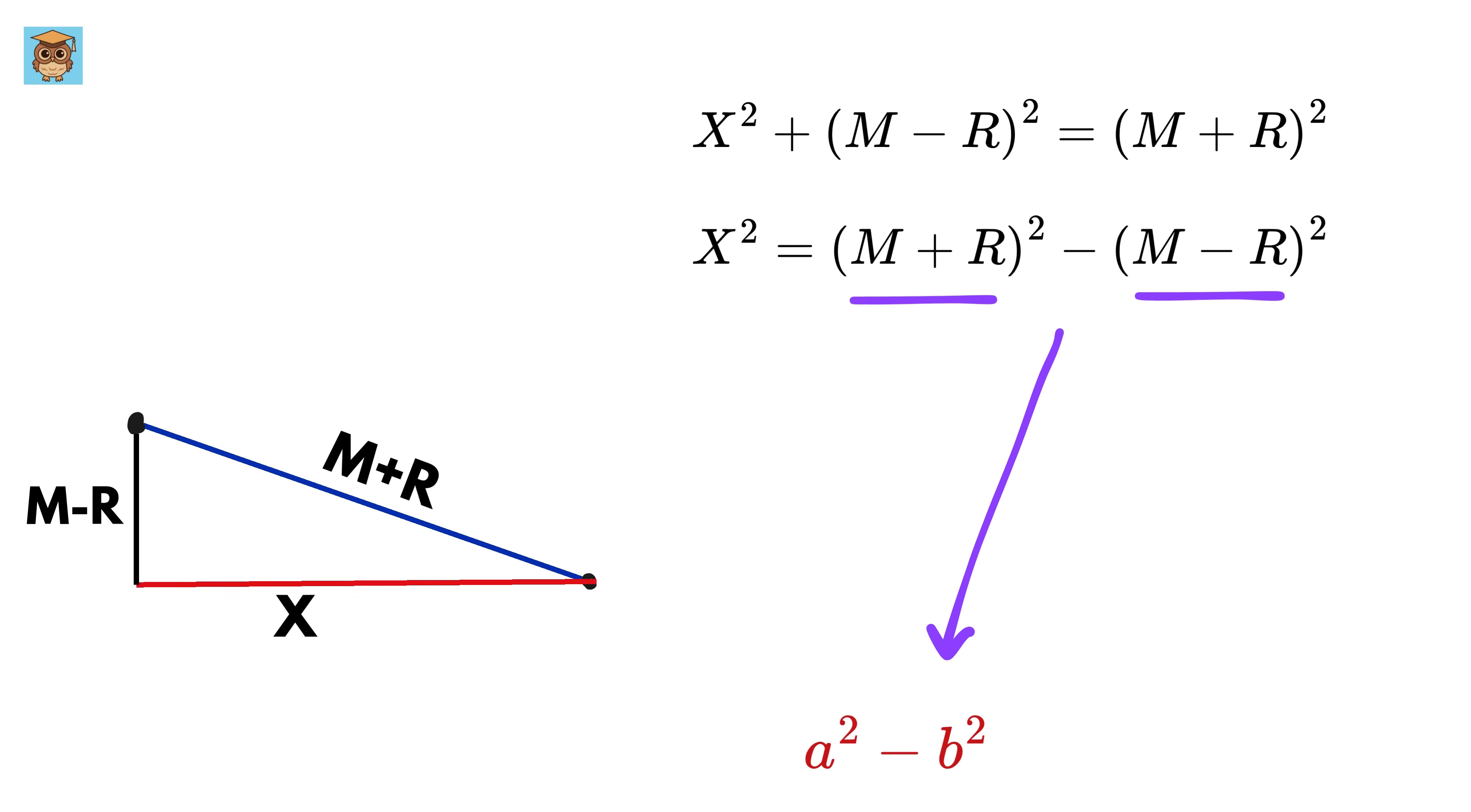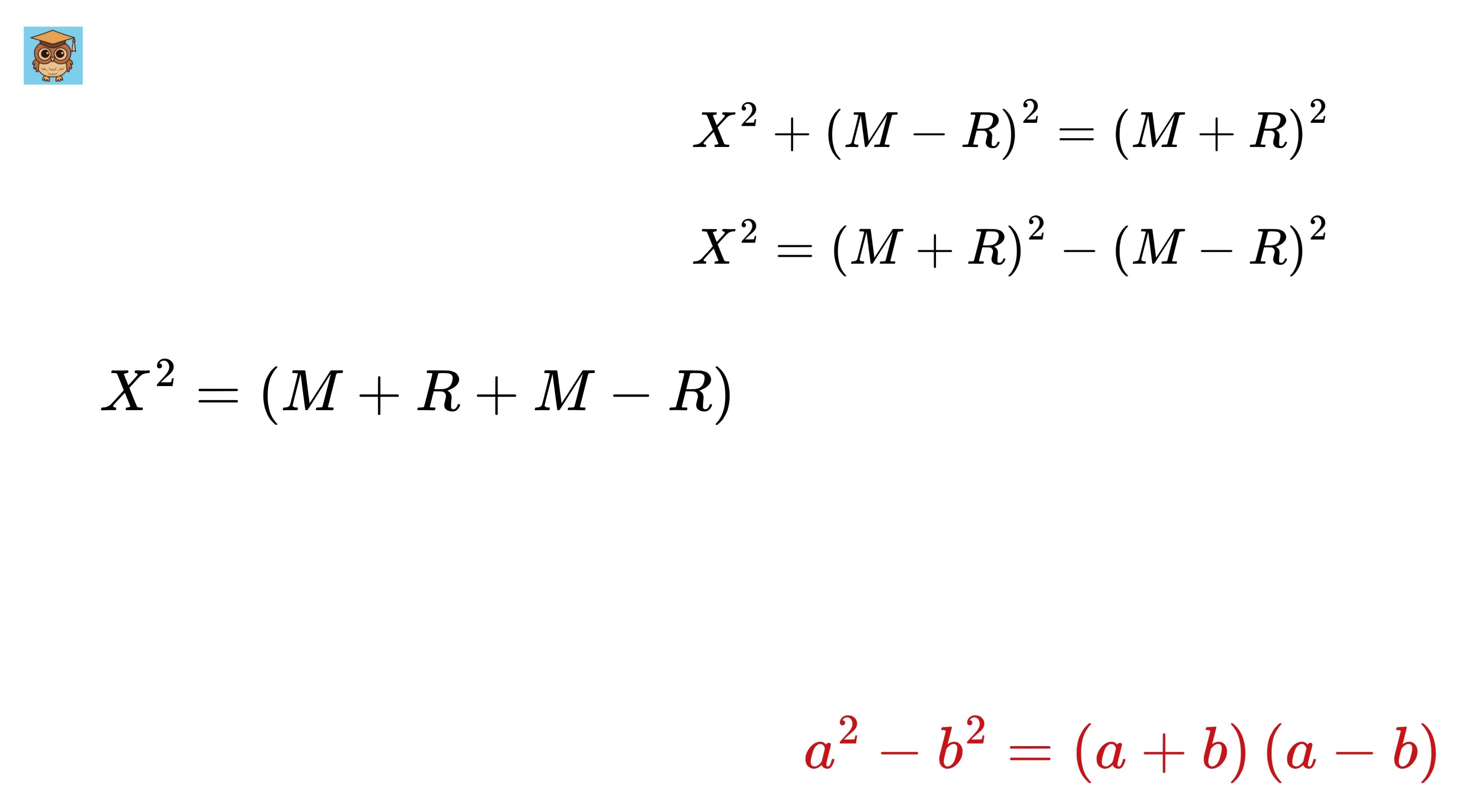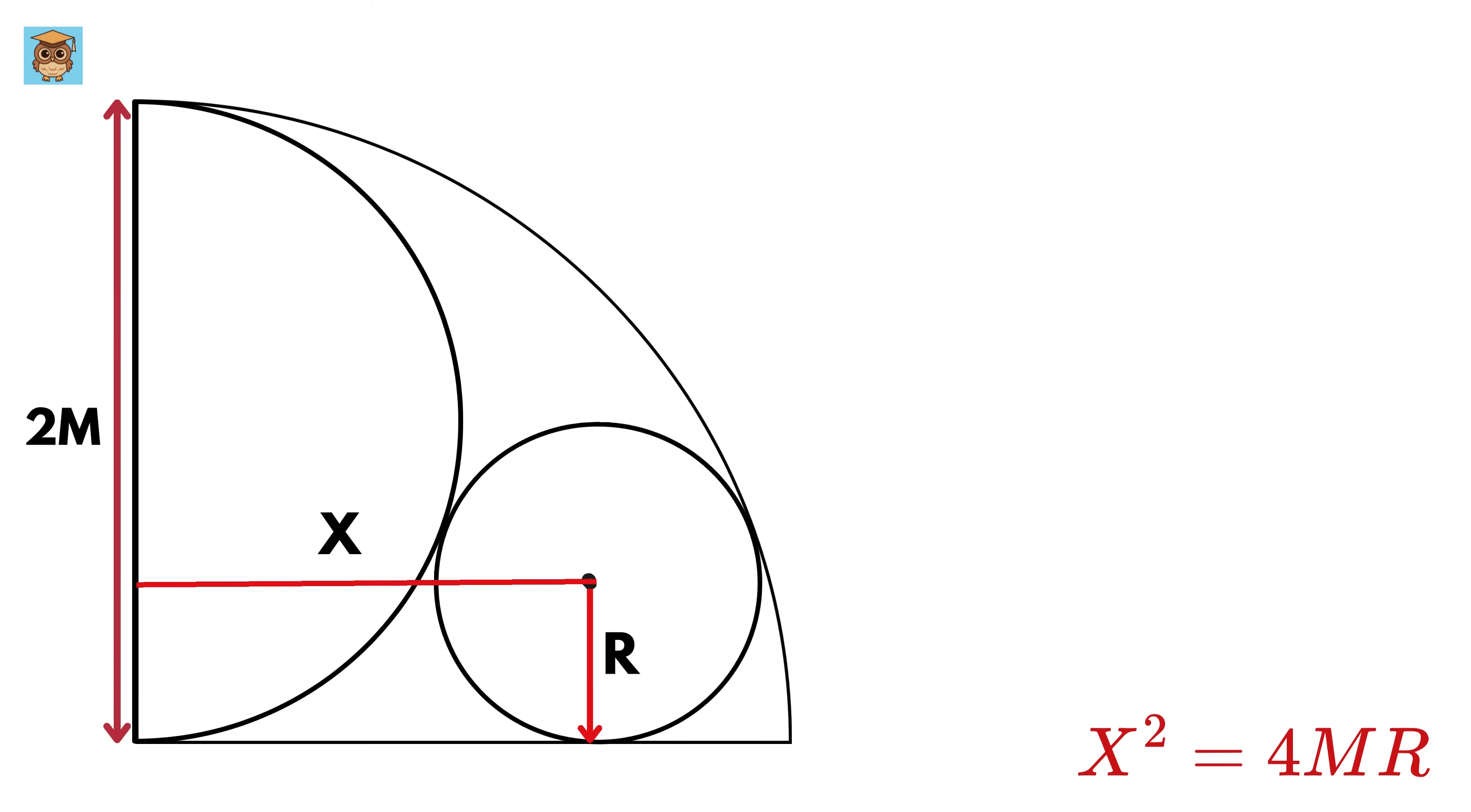Which is also equal to (a + b) times (a - b). So x² = (m + r + m - r) times (m + r - m - r), or this will become 2 times m and this will be 2 times r. So x² = 4mr. So far so good.